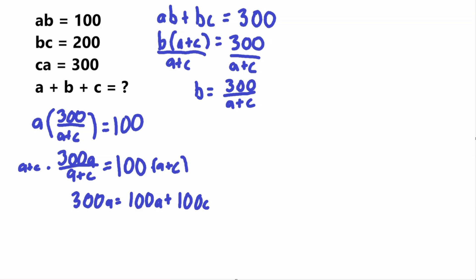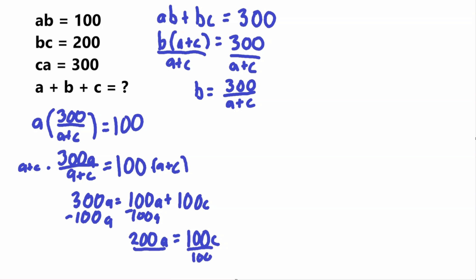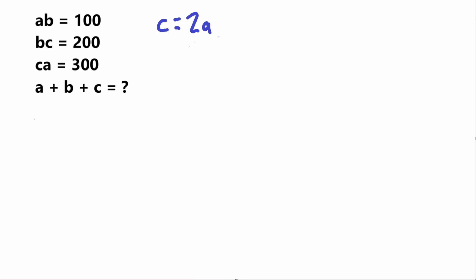I will subtract 100A from both sides to get that 200A is equal to 100C. Now I'm going to get C by itself, so I'll divide by 100, and I get that C is equal to 2A.